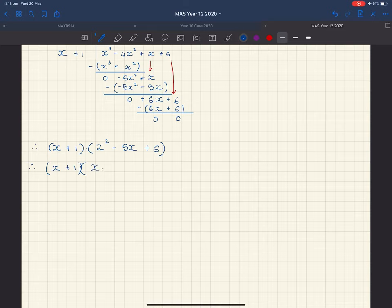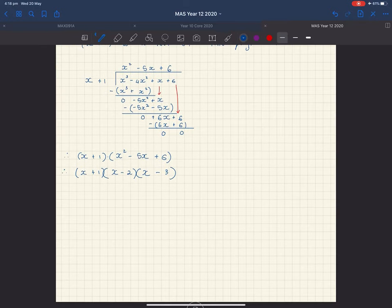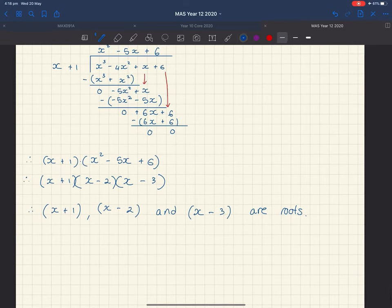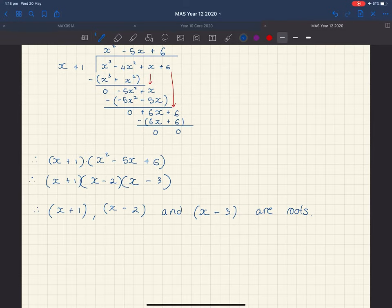This is x minus 2 times x minus 3. You can see if I was to multiply out these two brackets I would get back to this factor here. So we've now solved what all three factors for this big polynomial that we started with. Therefore, x plus 1, x minus 2, and x minus 3 are roots of our polynomial x cubed minus 4x squared plus x plus 6.